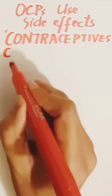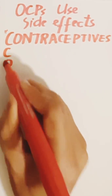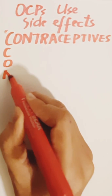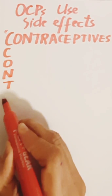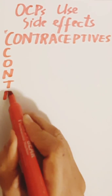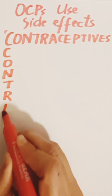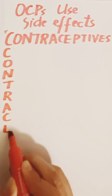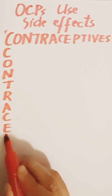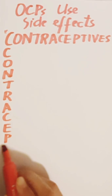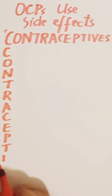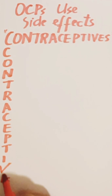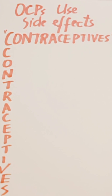The mnemonic is spelled out letter by letter: C, R, N, T, R, A, C, E, P, T, I, V, E, N, S — CONTRACEPTIVENS.